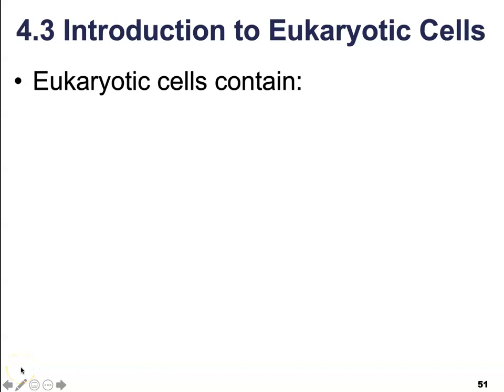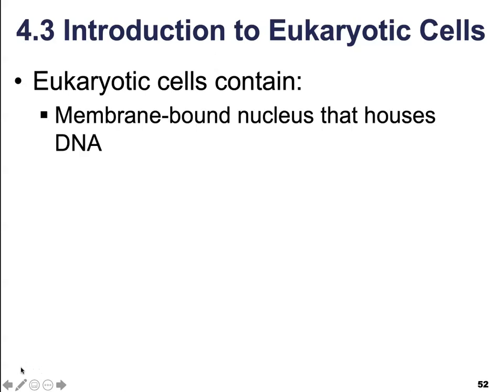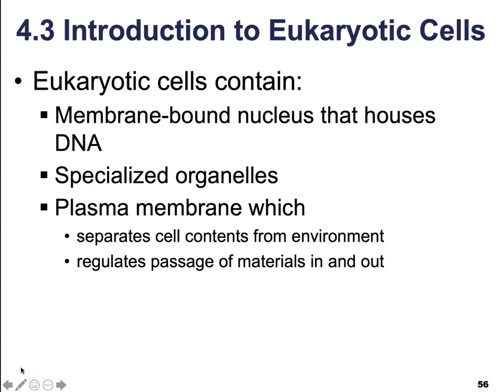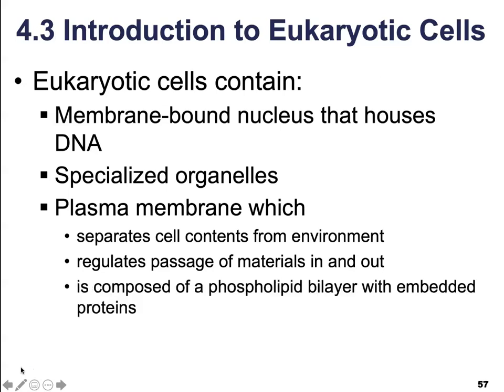Next up we're going to talk about eukaryotic cells. Eukaryotic cells are going to contain membrane-bound organelles that are responsible for housing and storing DNA. They're also going to contain specialized organelles to help carry out individual tasks. And finally, a plasma membrane, which is responsible for separating the cell contents from the environment, regulating the passage of materials in and out of the cell, and is composed of a phospholipid bilayer with embedded proteins.